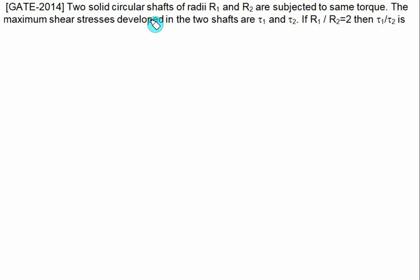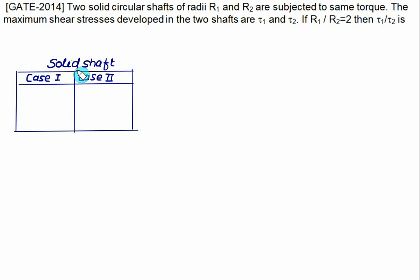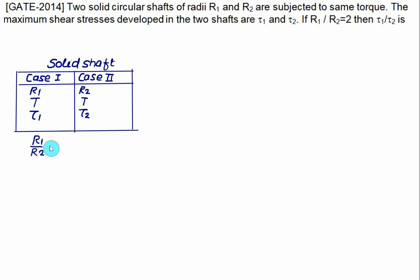Two solid circular shafts of radii r1 and r2 are subjected to the same torque. The maximum shear stresses are τ1 and τ2 respectively. Given that r1/r2 = 2, we need to find τ1/τ2. This is a comparison between two solid shaft cases: case 1 has radius r1, case 2 has radius r2, same torque in both.